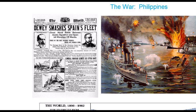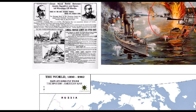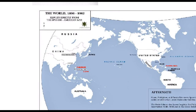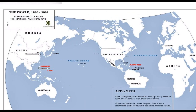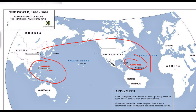Roosevelt dispatched Admiral Dewey and the American fleet to the Philippines to destroy the Spanish fleet. Dewey accomplished this in a pivotal battle in May 1898, utterly devastating the Spanish fleet while Americans barely suffered a scratch. With battles in the Philippines, battles in Cuba, and a landing in Puerto Rico, by the summer of 1898 the United States had acquired control of Puerto Rico, liberated Cuba from Spanish rule, and acquired the Philippines and Guam — stretching America's overseas empire from the Atlantic to the Pacific.